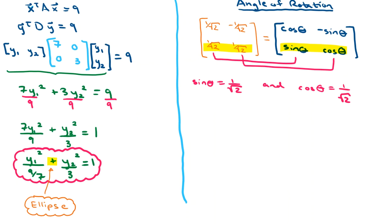One of those being sine theta equals 1 over radical 2. Both need to hold true in order for these two matrices to really equal each other. So we need to determine what angle theta is such that sine theta is equal to 1 over radical 2 and cosine theta is equal to 1 over radical 2 as well.